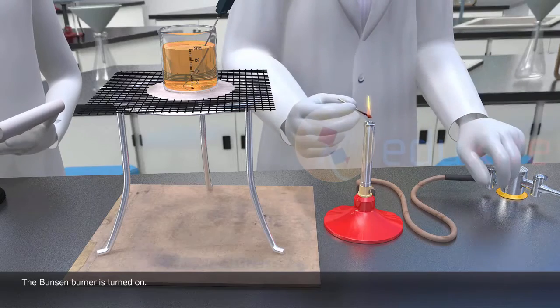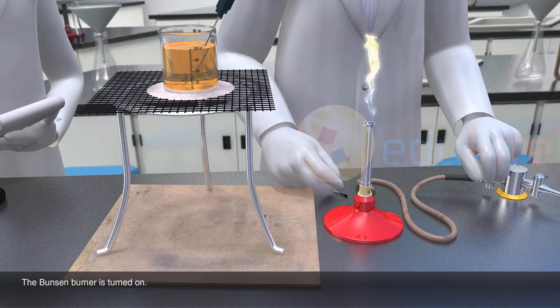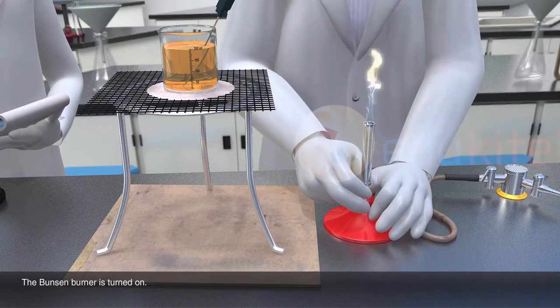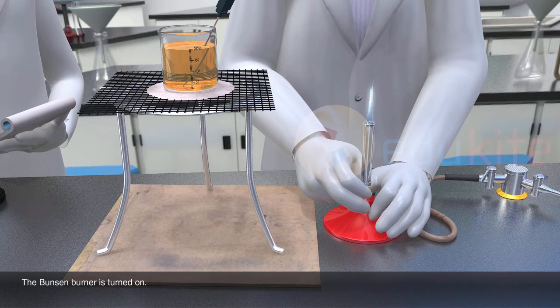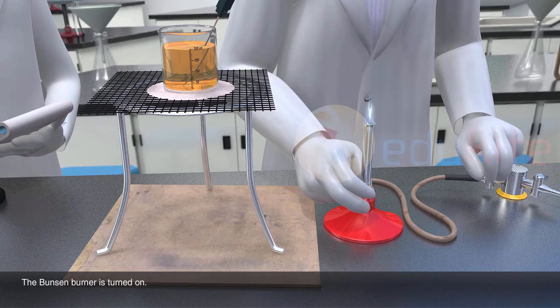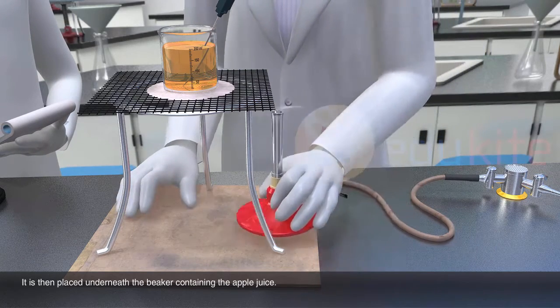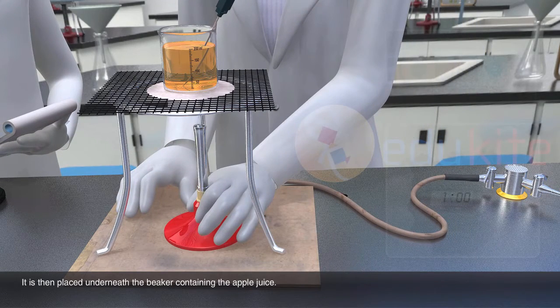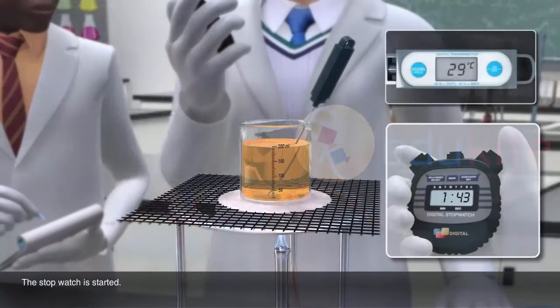The Bunsen burner is turned on. It is then placed underneath the beaker containing the apple juice. The stopwatch is started.